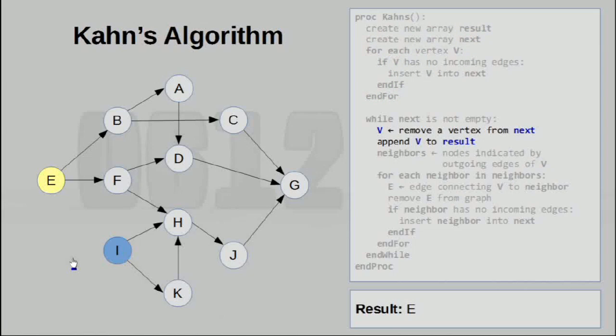First of all, pick a vertex from the array next, and simply append it to the result. So as you can see, the array result is here. We've just looked at E, so we're going to add E to the result array.